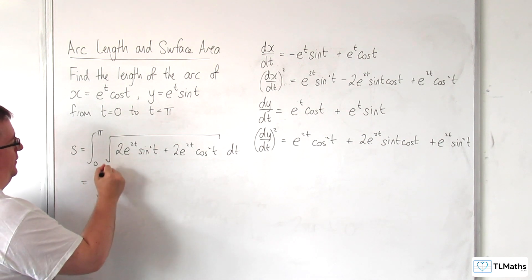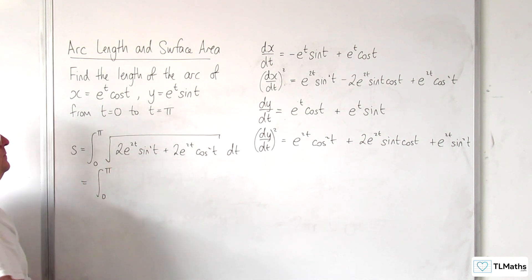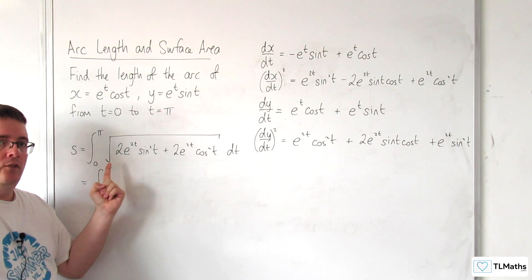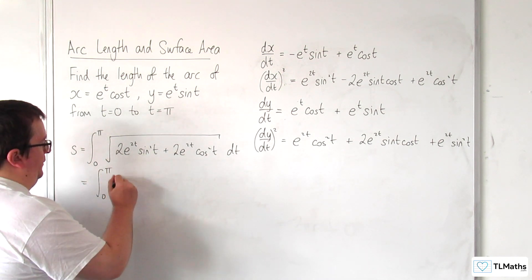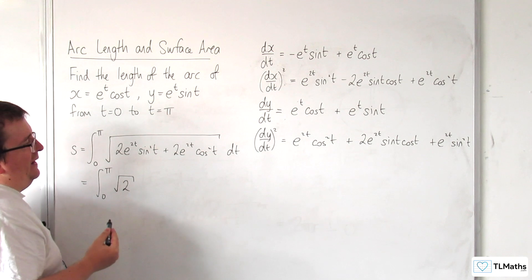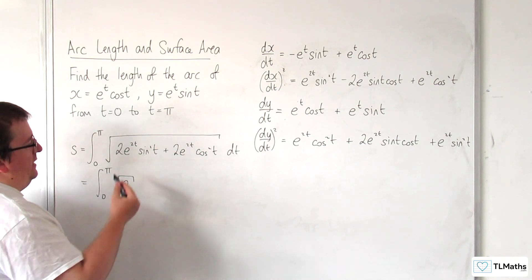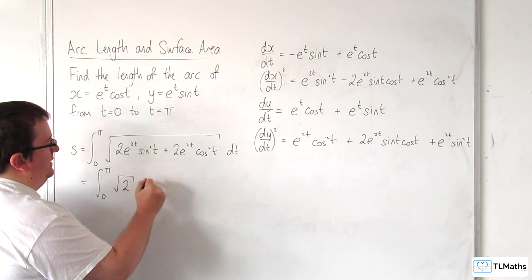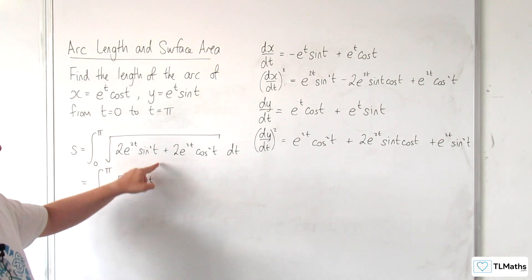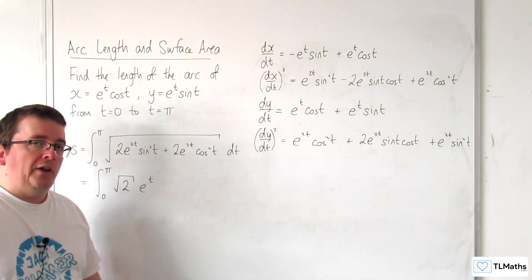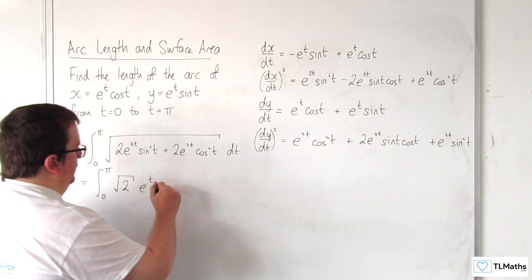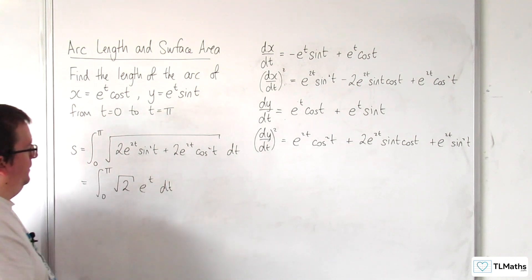Let's see what this simplifies to. We can factor the 2 out of the square root to get root 2. We can also factor out e to the 2t — the square root of e to the 2t is just e to the t. And we're left with the square root of sine squared plus cosine squared, which is just 1. So the integrand simplifies to root 2 times e to the t.